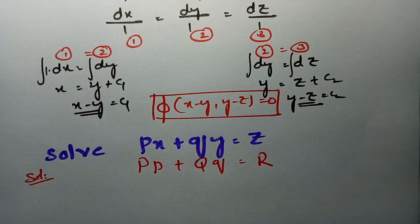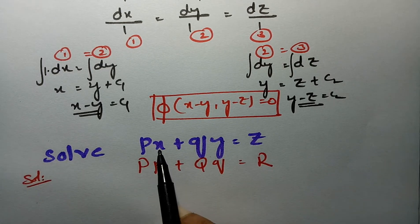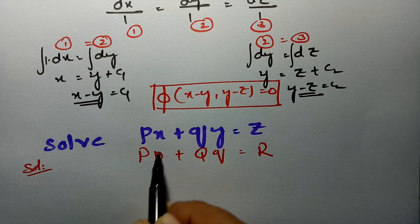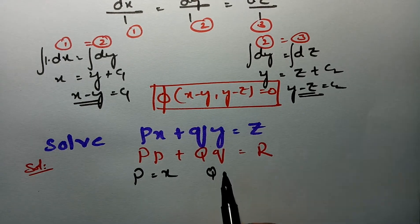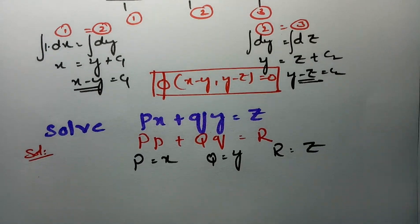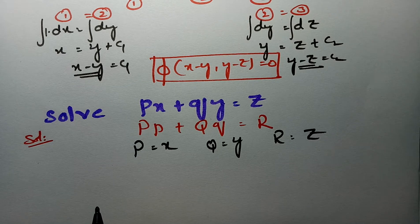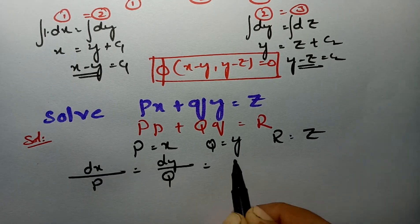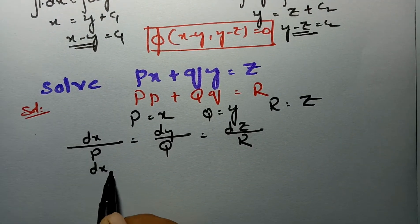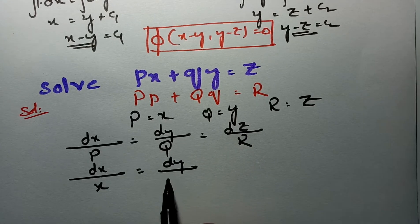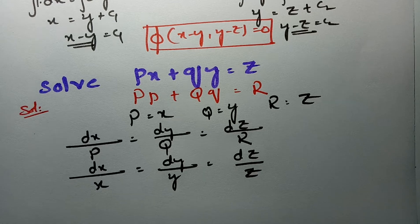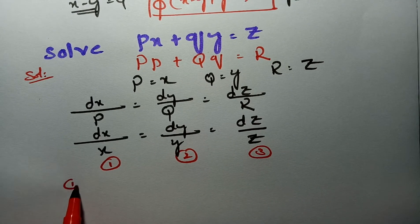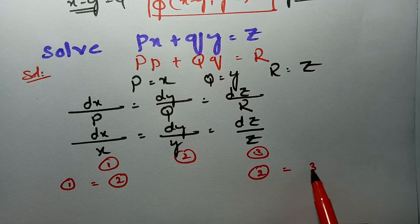For the second problem, if we compare with the form P·p + Q·q = R, we identify capital P = x, capital Q = y, and capital R = z. This is a Lagrange's linear equation. Transforming into the auxiliary form: dx/x = dy/y = dz/z, giving three equations 1, 2, and 3.